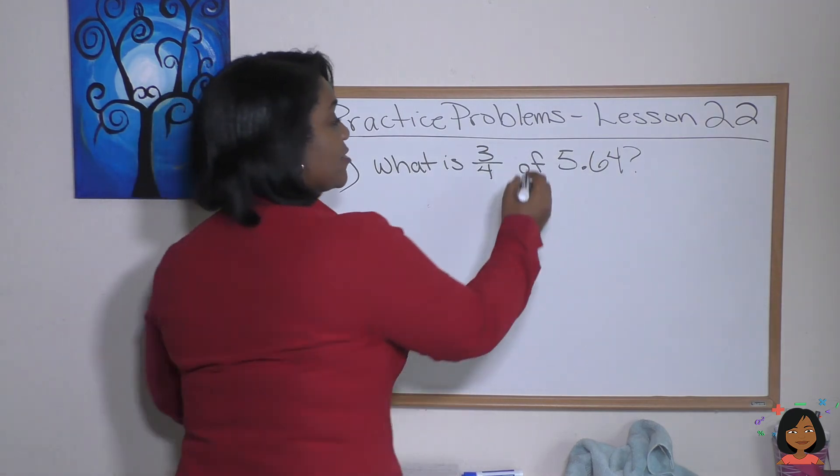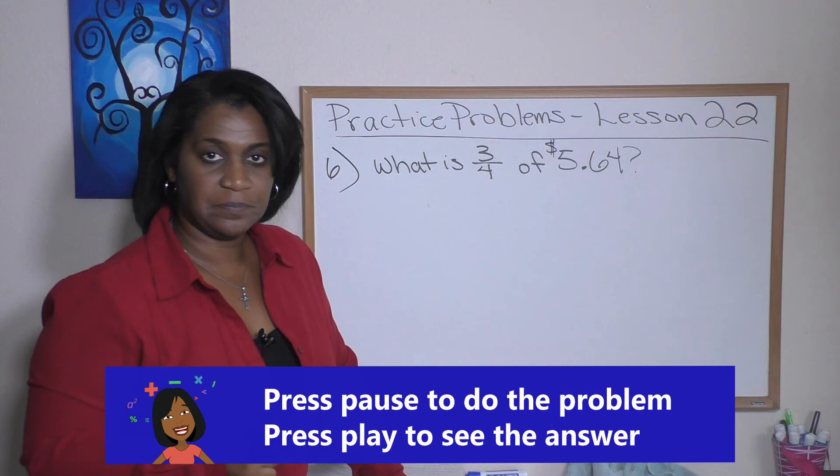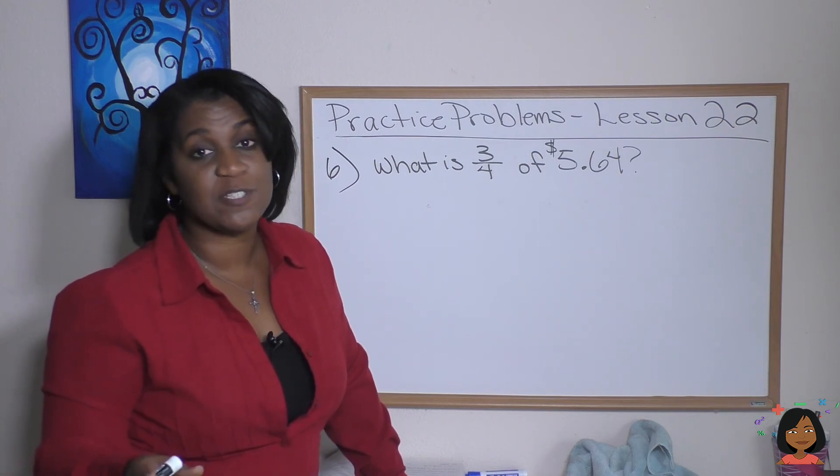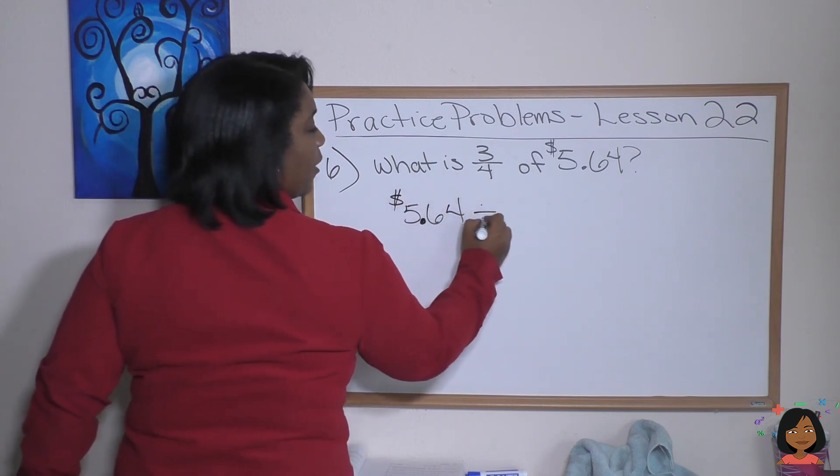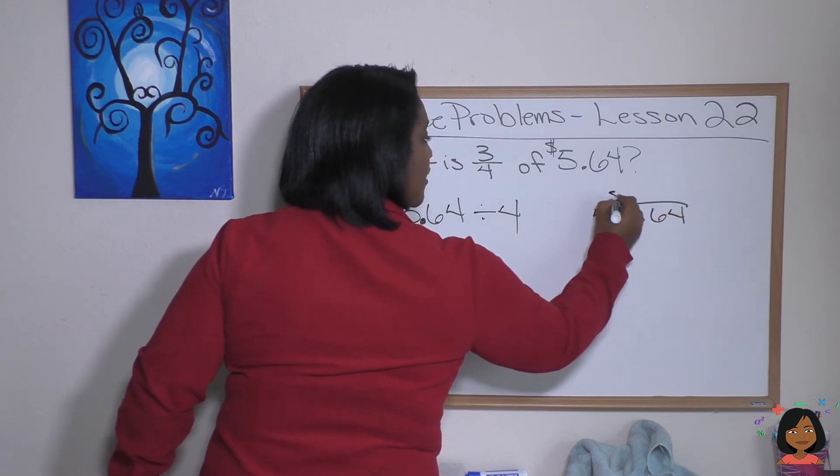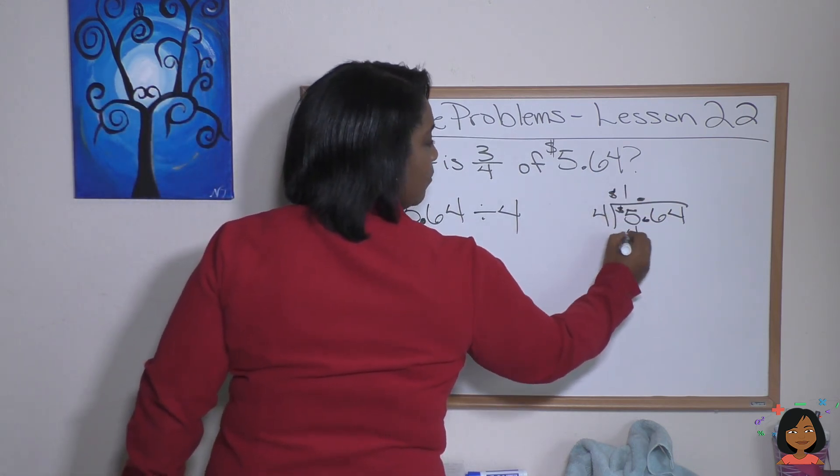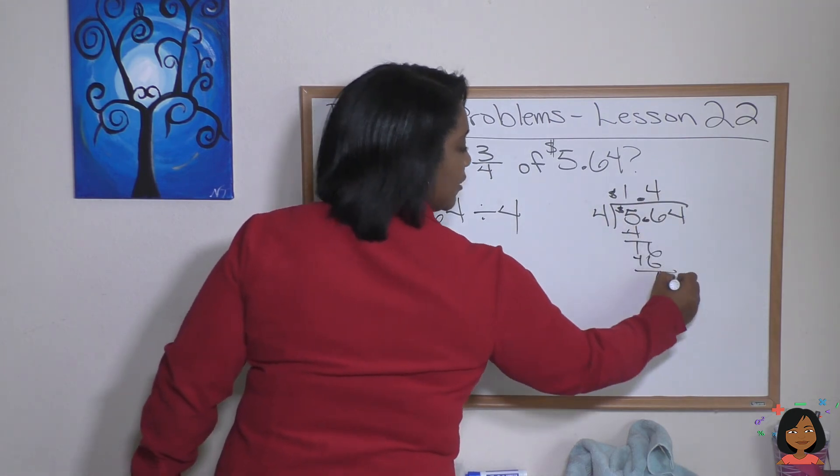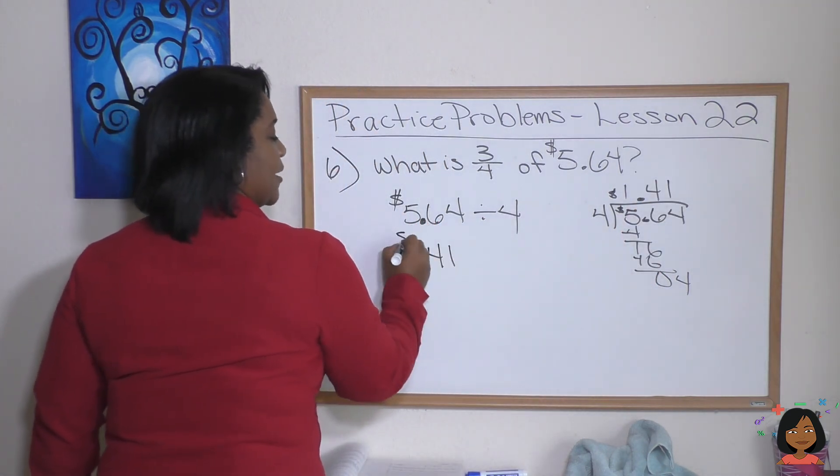Here's your final problem, problem six. What is three fourths of $5.64? Get to it. Just because this is money doesn't mean we don't do it exactly how we've been doing it all along. So we're going to take our $5.64 and divide it by 4. Let's do it over to the side. 4 into $5.64. Oh look, I'm just taking care of my decimals right now because I don't want to forget them. So there they are, they're in place. 4 into 5 goes 1 time, 1 is left over. Bring down the 6. 4 into 16 goes 4 times. Bring down my 4. 4 into 4 goes 1 time. Which means each of my group has $1.41 in it.